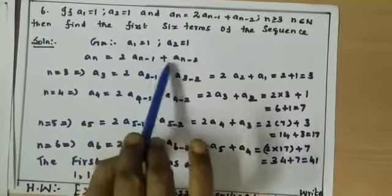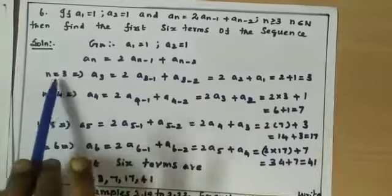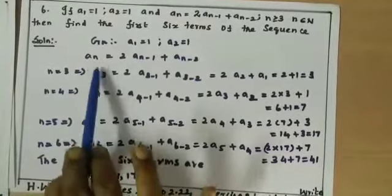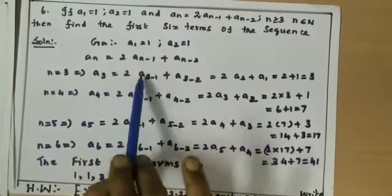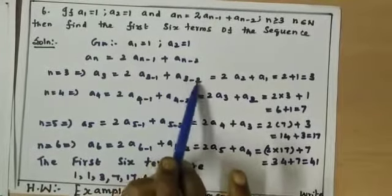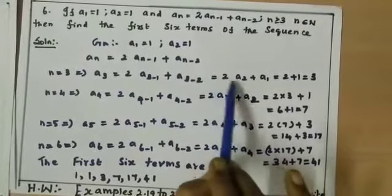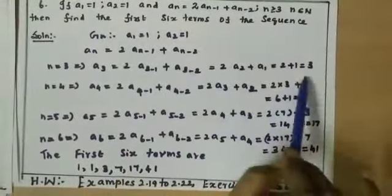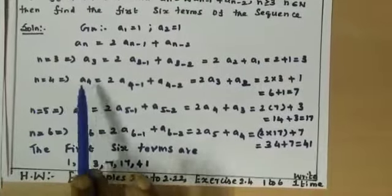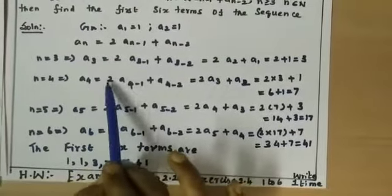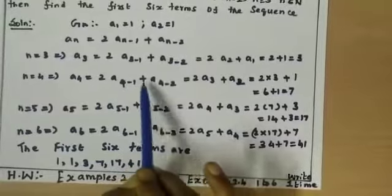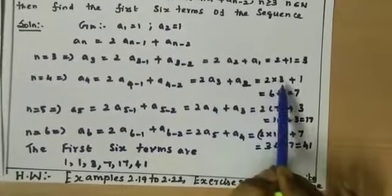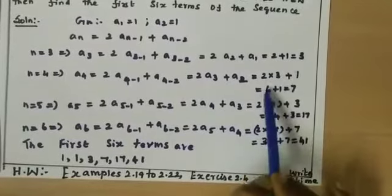The formula is an = 2·an-1 + an-2. For n = 3: a3 = 2·a2 + a1 = 2 into 1 plus 1 = 3. For n = 4: a4 = 2·a3 + a2 = 2 into 3 plus 1 = 6 + 1 = 7.